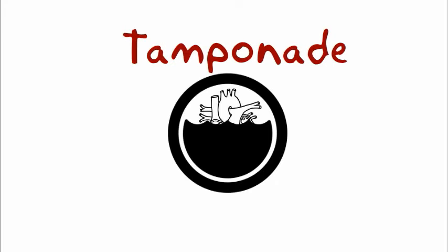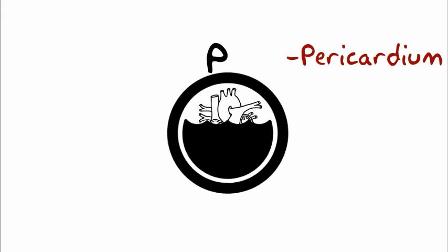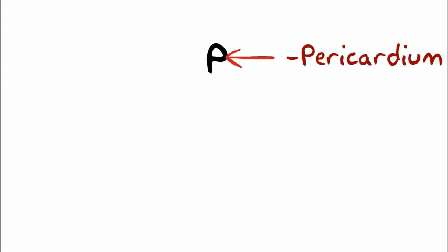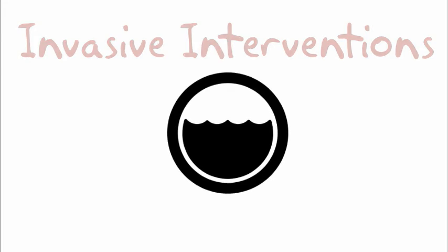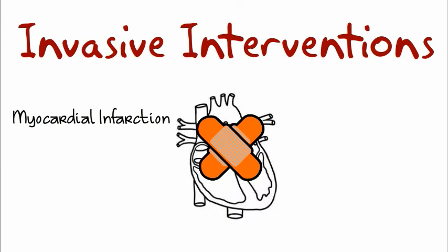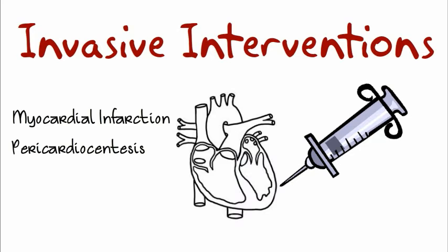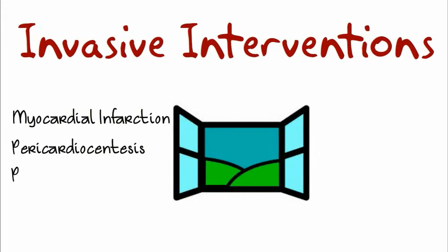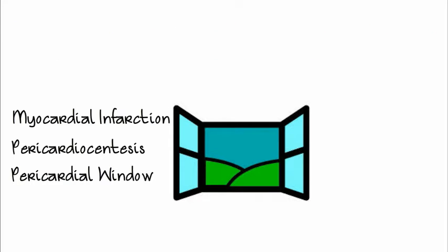Tamponade — fluid around the heart. P for pericardium, where the fluid is. This fluid may also be caused by an invasive procedure from a myocardial infarction, or a bypass. Or pericardiocentesis, where the needle is put into the pericardium and fluid is drawn away from the heart.